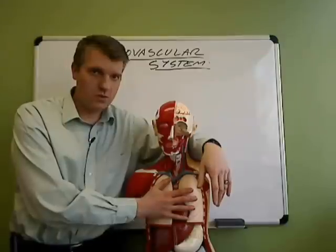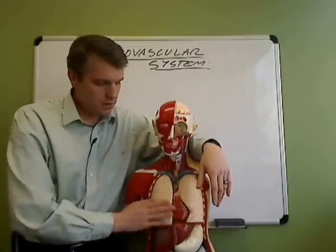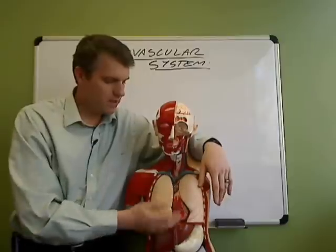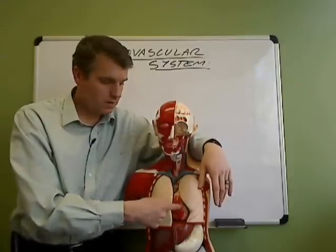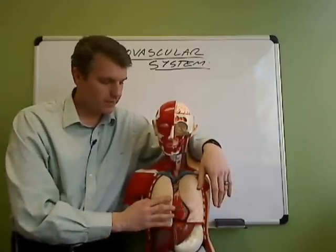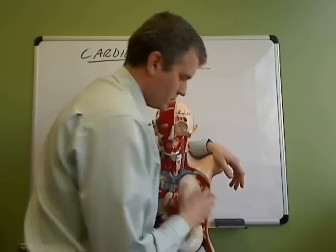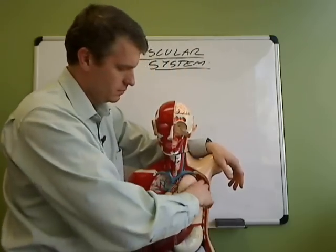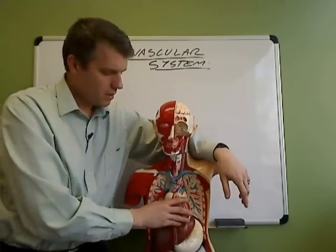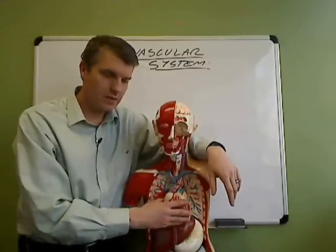This of course is a torso model from my lab. These are the organs inside the thoracic cavity. The heart is here between the right lung and the left lung. If I take out the lungs, you can see that the heart is almost in the center of the chest — it's a bit towards the left.